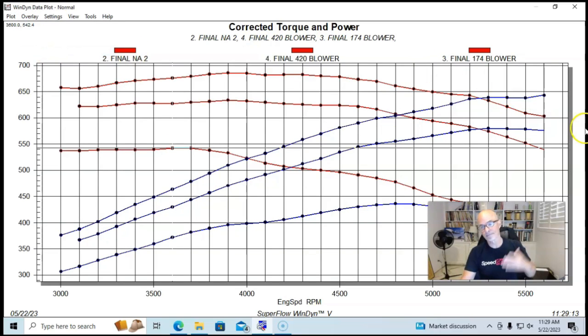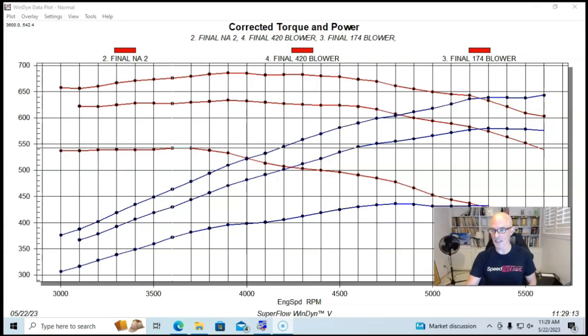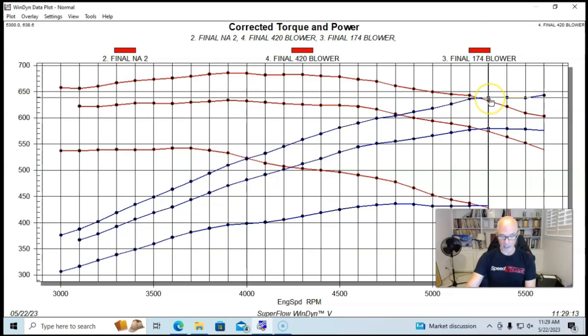Here's what happened when we stepped up to the bigger blower. Obviously bigger blower made more power. It also made more boost. We have our NA power curve, our 174 blower, and our 420 blower. Equipped with the 420 blower, we made 643 horsepower.